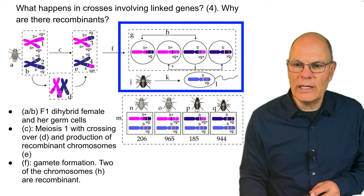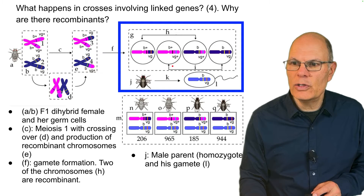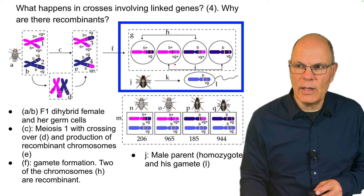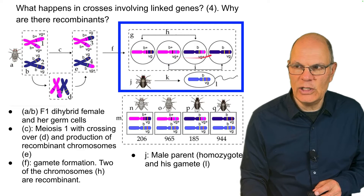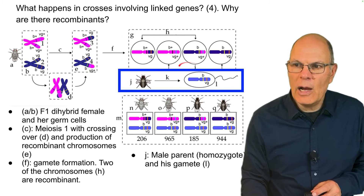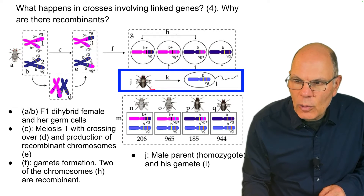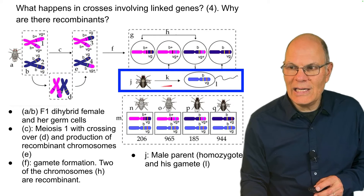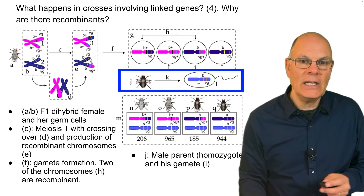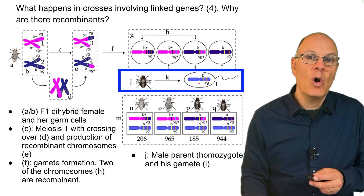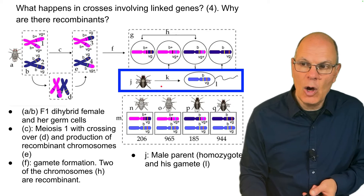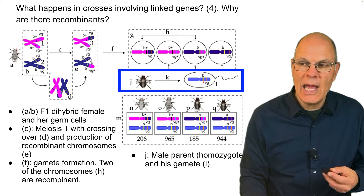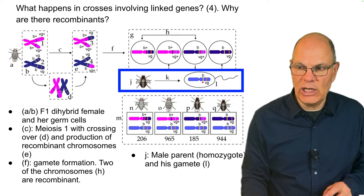The two eggs at letter I are parental — they're just like the parents: B-plus VG-plus and B VG. Over here, the male parent is a homozygote. He can only produce one kind of gamete — he's homozygous and can only produce a gamete that has B and VG.